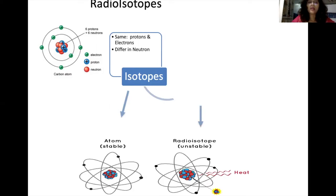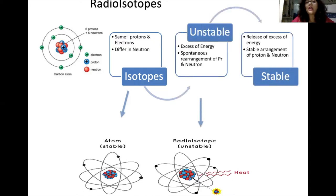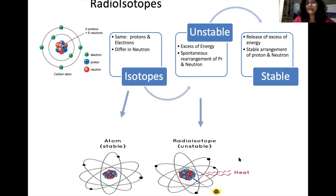Whenever this difference occurs, an isotope may be stable in the given proportion of neutrons and protons and remain stable, or it may be unstable because it has excess energy and always tries to spontaneously rearrange its protons and neutrons to become stable. Within this rearrangement, it either emits a particle or heat. When this excess energy is released in the form of a particle or heat, it gains a stable arrangement of protons and neutrons and becomes a stable isotope.